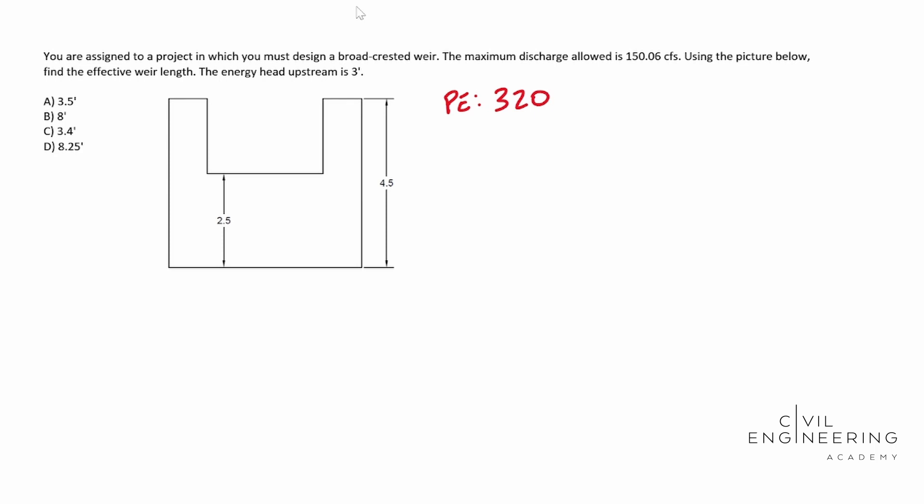When you look on that page, you're going to find a formula that looks very similar to this. You're going to have Q is equal to two over three times your CV value times your effective length times the square root of two times G, and then we have our energy head HE, and then that's raised to the three halves power. So that's our formula that we can use.